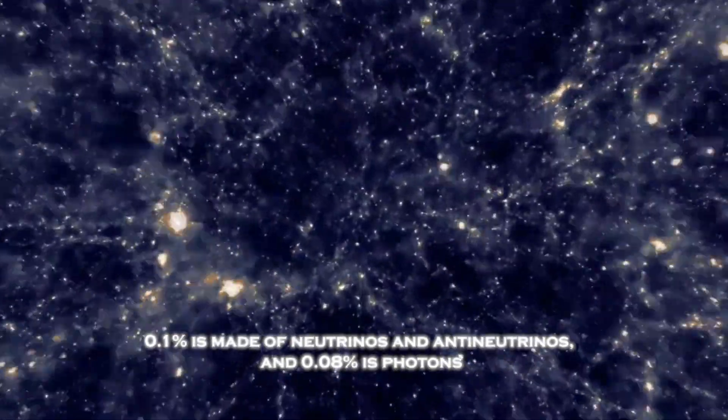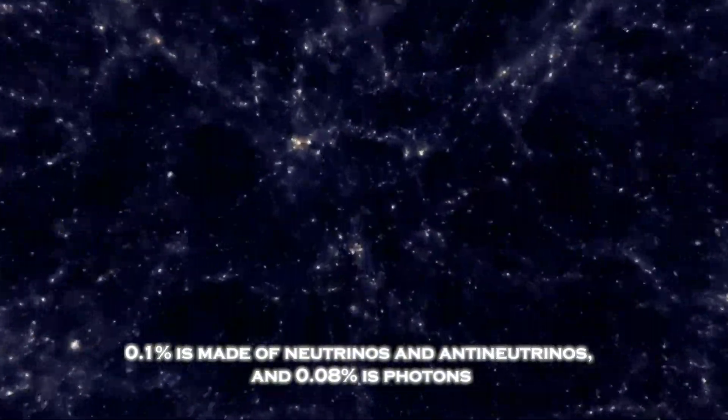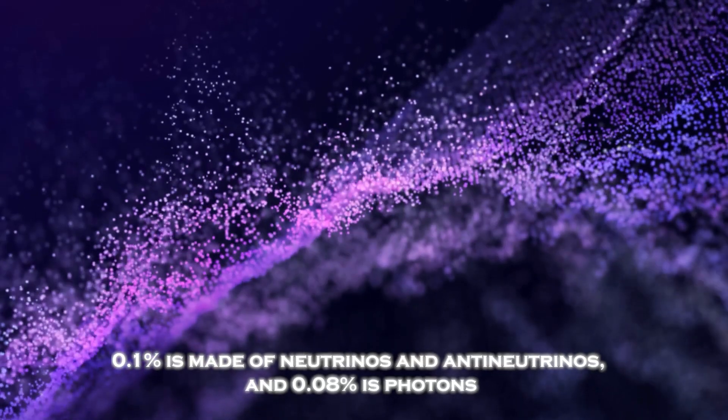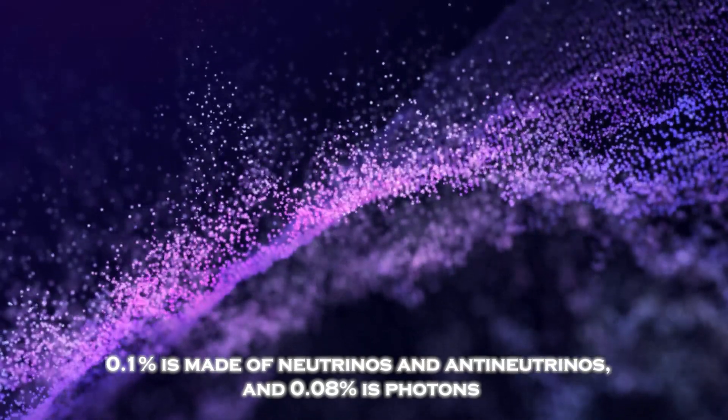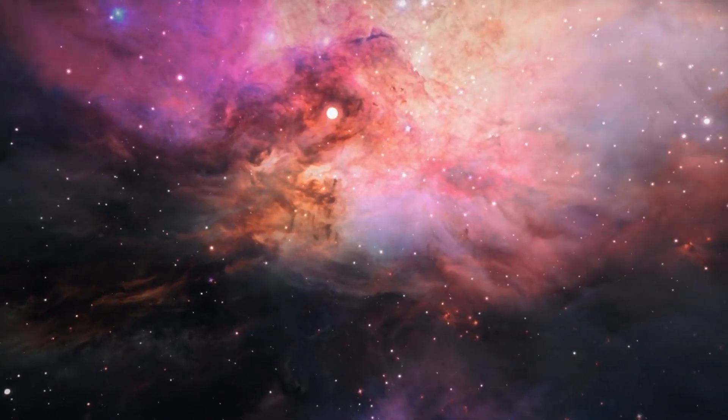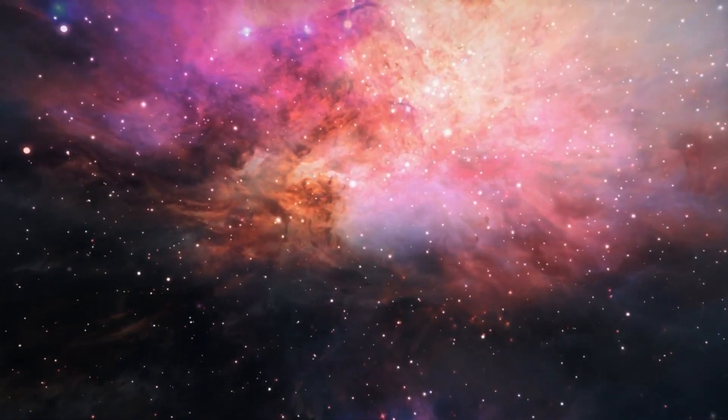Only 0.1% is made of neutrinos and antineutrinos and 0.08% is photons. No other entities, such as cosmic strings or textures, are found.